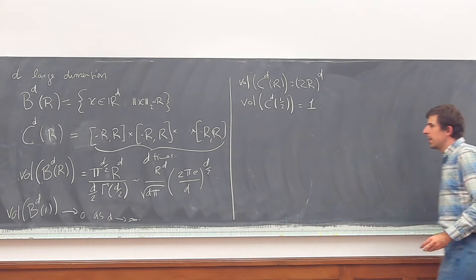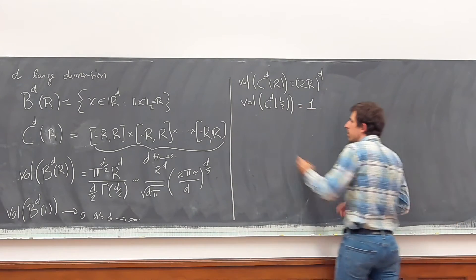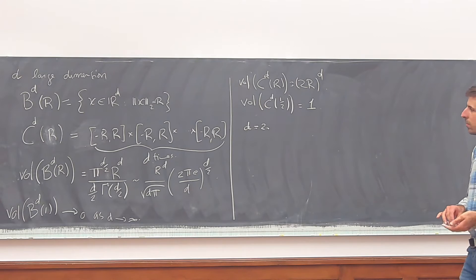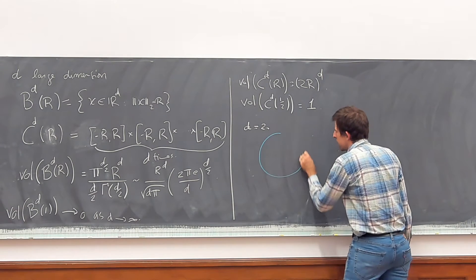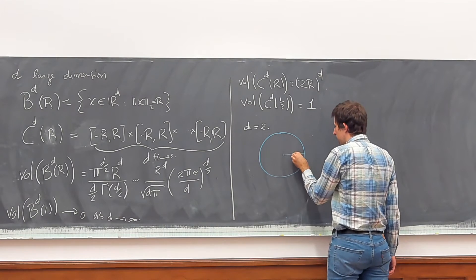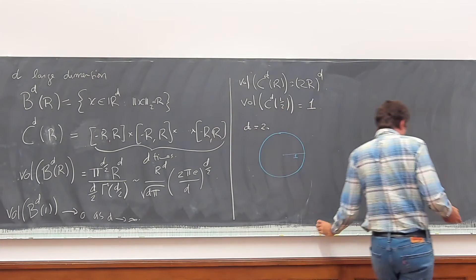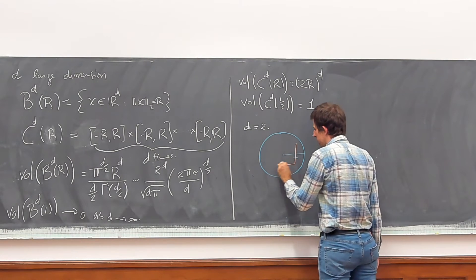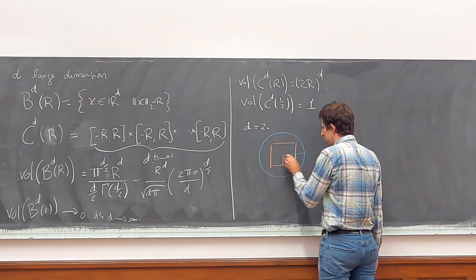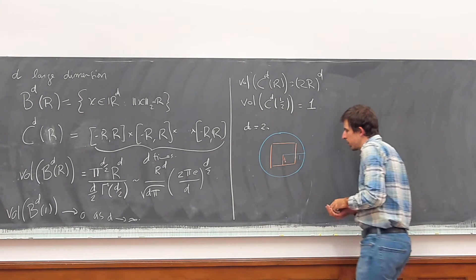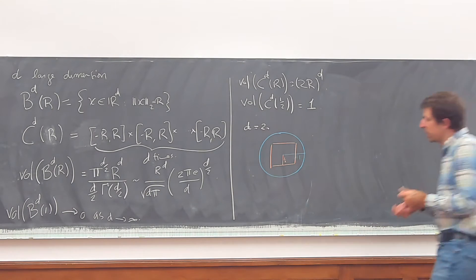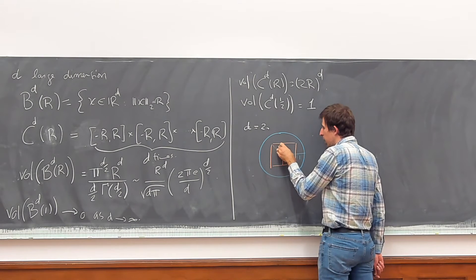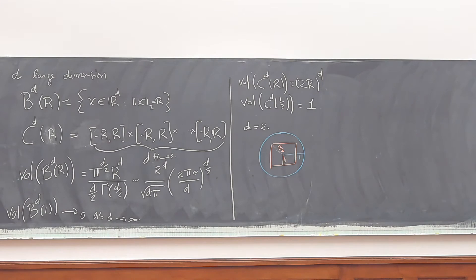Let's draw a picture. Take d equals 2. Draw the ball of radius 1, and now draw the cube of radius one half. The cube fits completely inside the ball. The point furthest from zero on the cube, by Pythagoras, has norm sqrt(2)/2, which is still smaller than one.